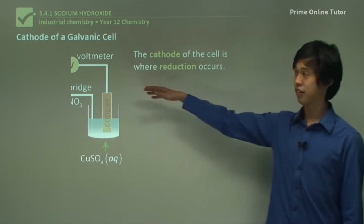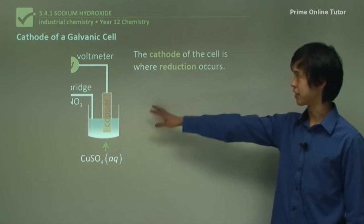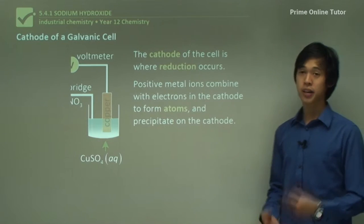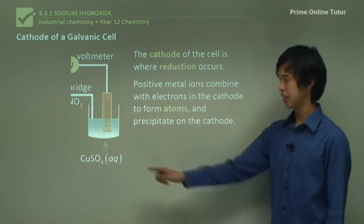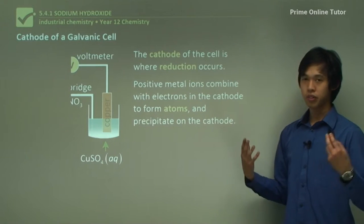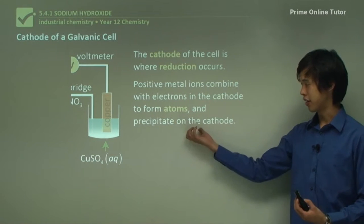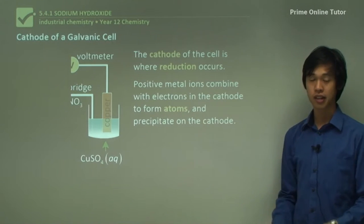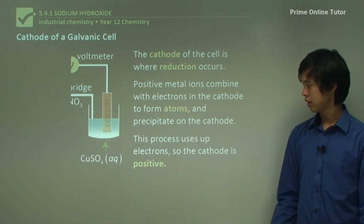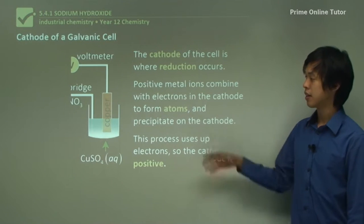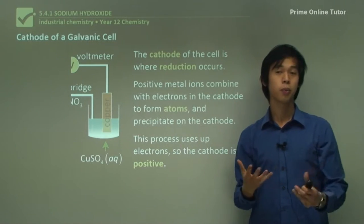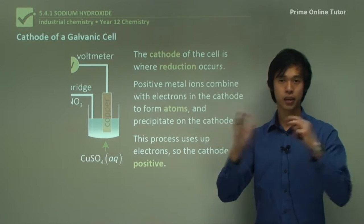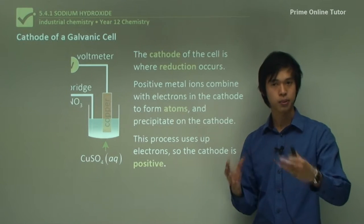At the cathode, reduction occurs — red cat. The positive metal ions in solution, the copper here, absorb electrons from the other side to form atoms and precipitate on the cathode as pure copper atoms. This process uses up electrons, so the cathode is positive. The copper electrode will start to get bigger, proportional to the zinc getting smaller — the copper gets bigger and bigger.